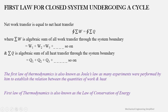The net work transfer is the algebraic sum of all work transferred through the system boundary — W1, W2, W3, and so on — where some can be work done on the system and some work done by the system. Similarly, δQ is the algebraic sum of all heat transfers. Heat given to the system is positive, heat taken out is negative. Work done by the system is positive, work done on the system is negative.